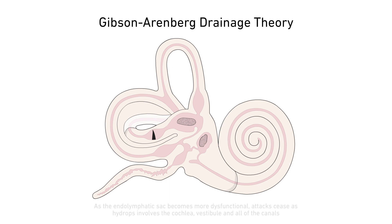As the endolymphatic sac becomes more dysfunctional, the attacks cease as the hydrops involves the cochlea, vestibule and the canals.